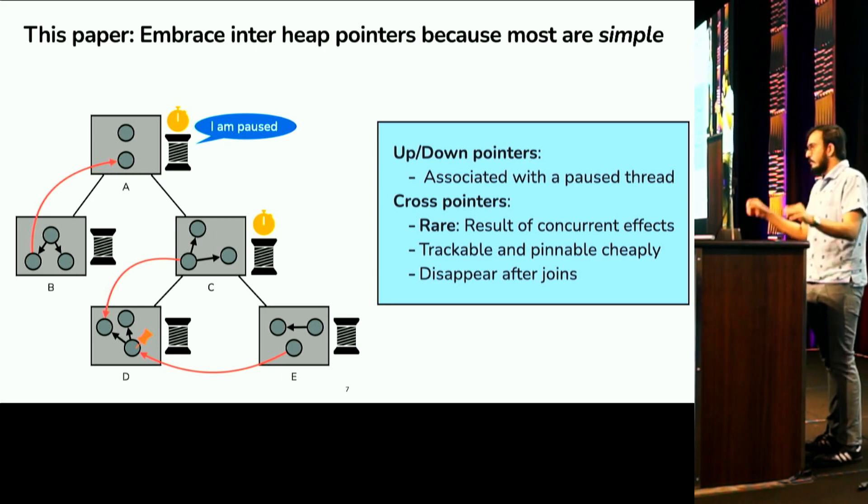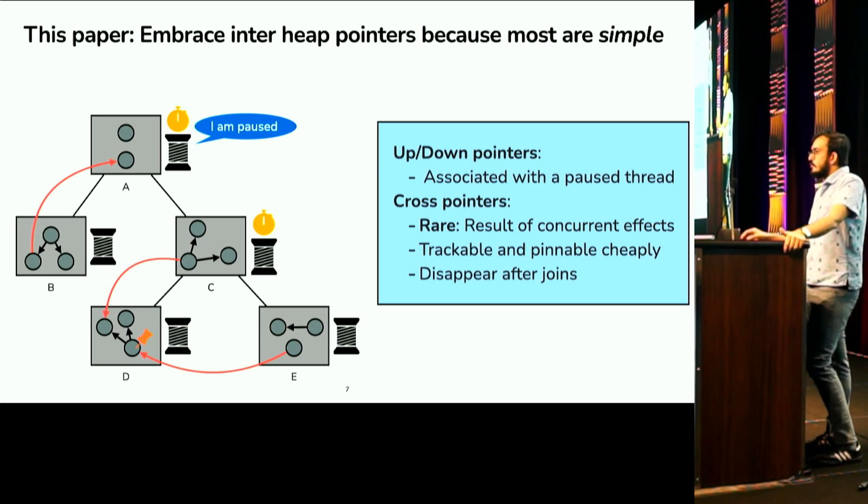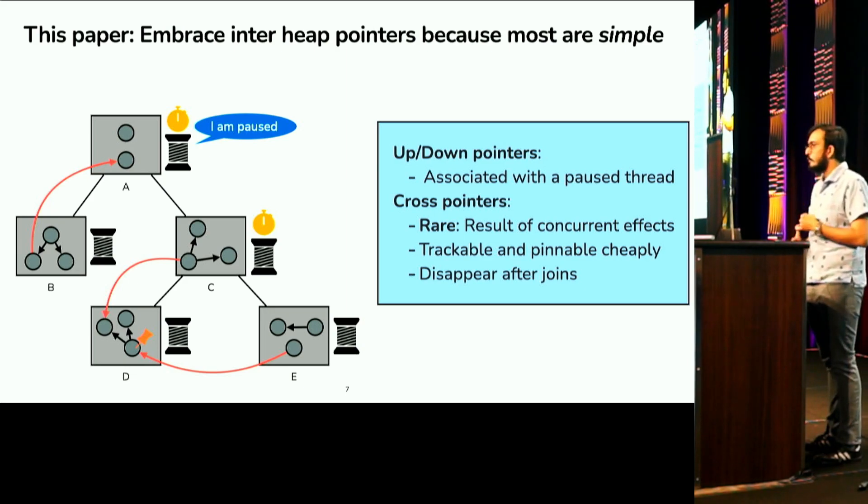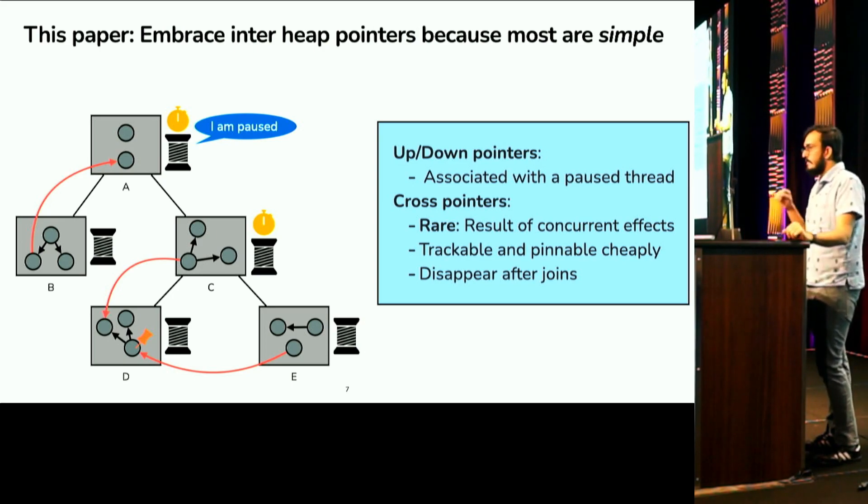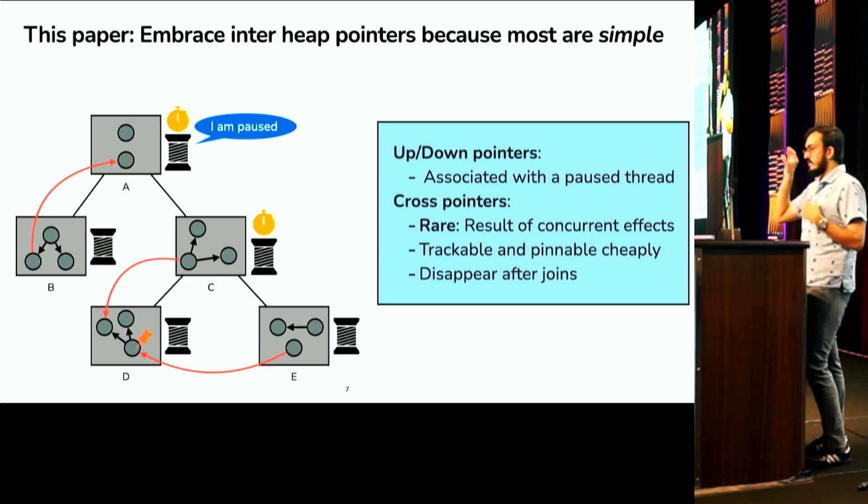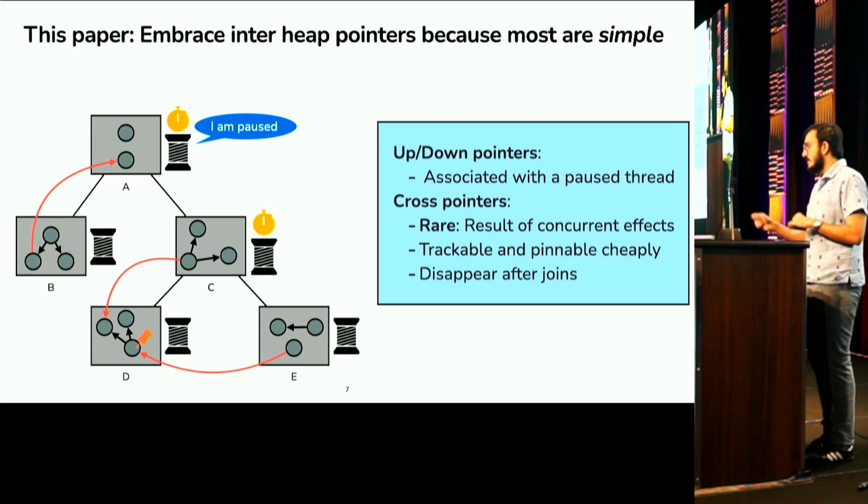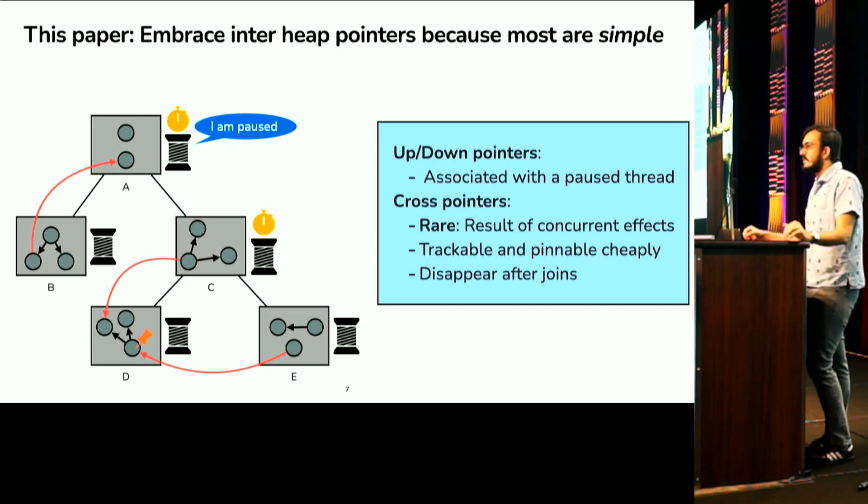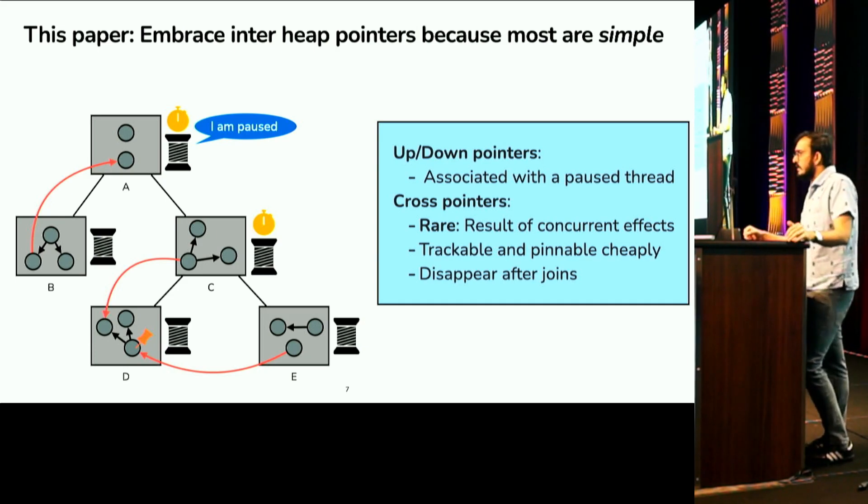So, let me elaborate on why they are simple. You can classify inter-heap pointers into three kinds, up pointers, down pointers, and cross pointers. And we can observe that up and down pointers are always associated with a paused thread. So, for example, if you see the up pointer from heap B to heap A, a pointer starts at some heap and always targets an object in a paused thread. Similarly, a down pointer always starts at a paused thread and goes to some heap. So, the point is that garbage collector can deal with these pointers because it knows that one of the threads is always paused. And in our prior work with Sam and Umut, we have basically designed provably efficient techniques in order to deal with these up and down pointers.